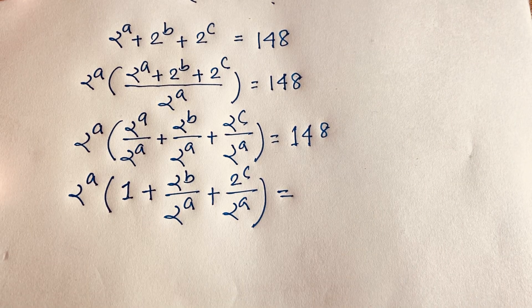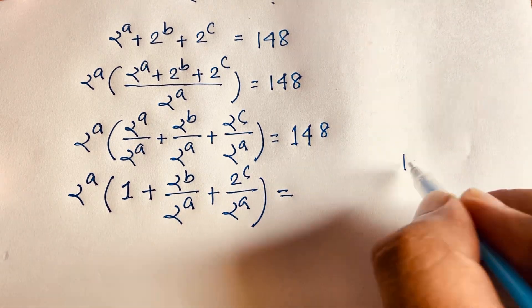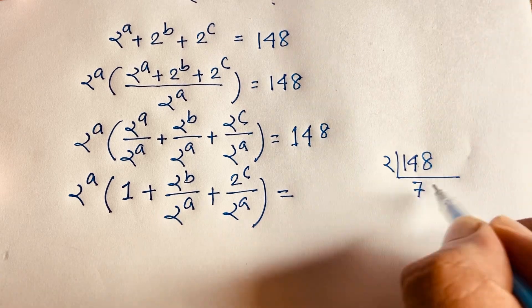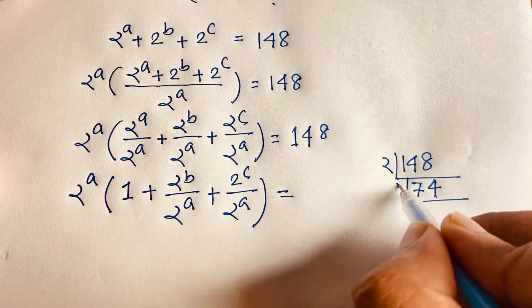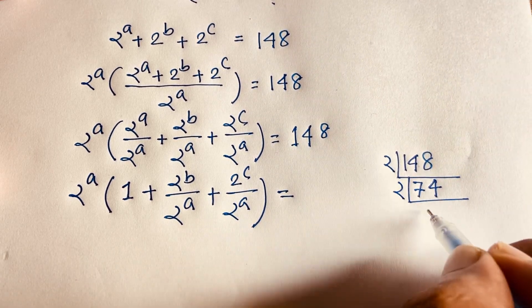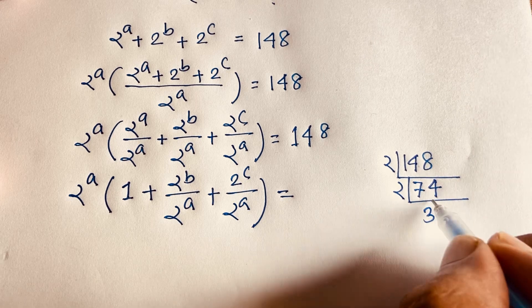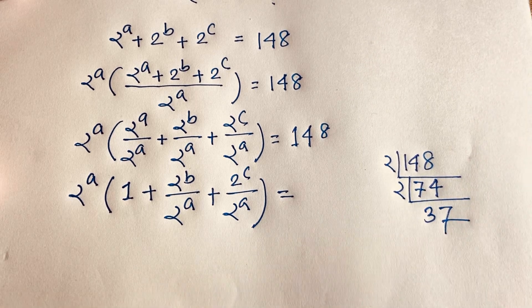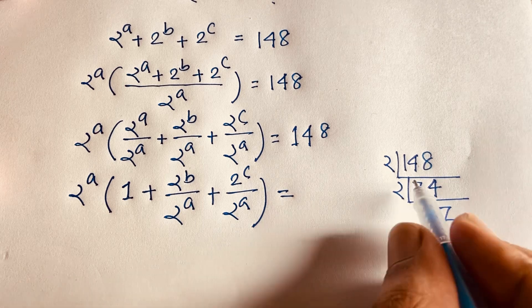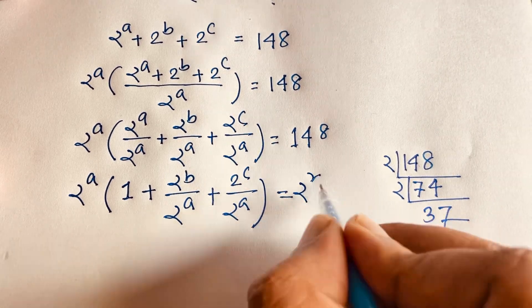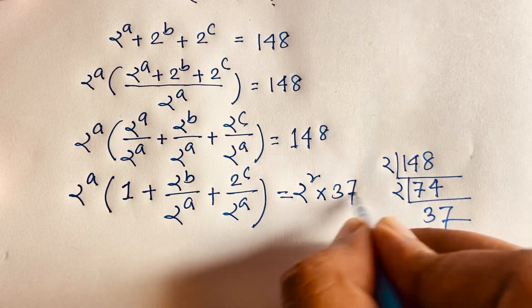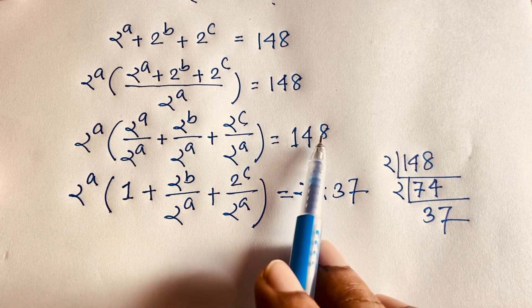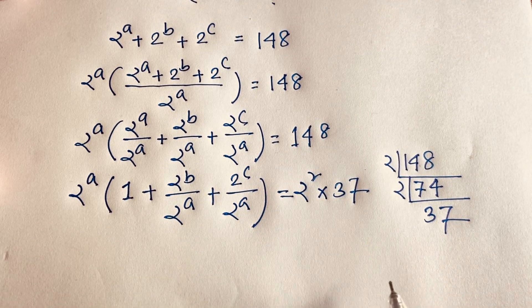We know here is 148. If I divide 148 by 2 we get 74, divide by 2 again we get 37. So I can say 148 equals 2 to the power 2 times 37.